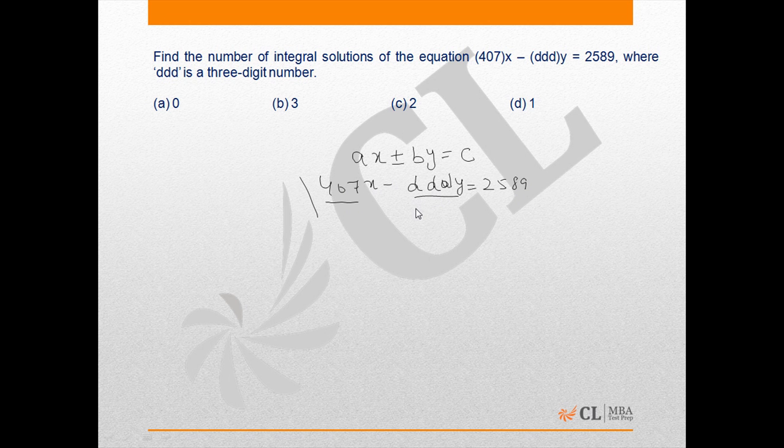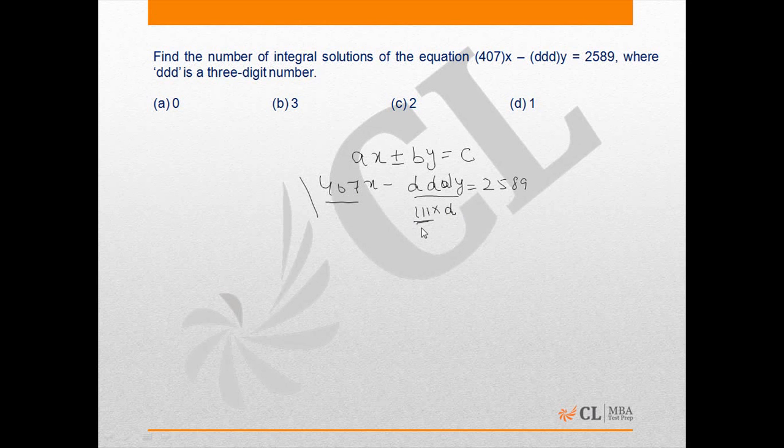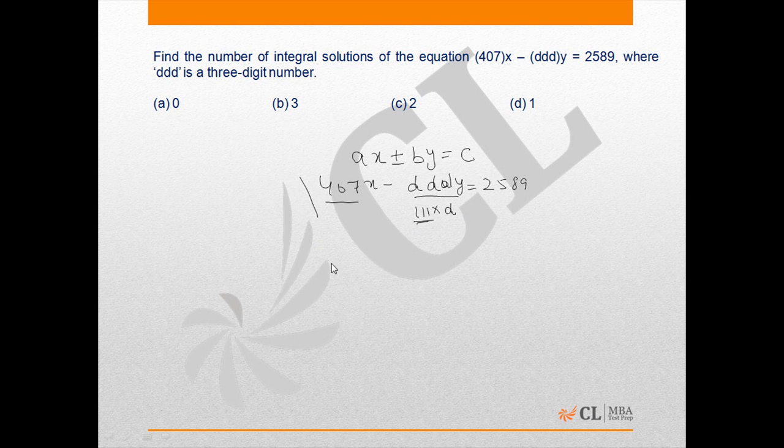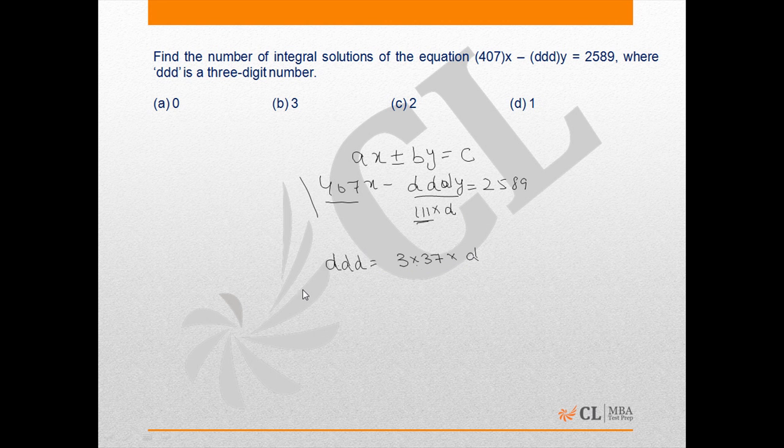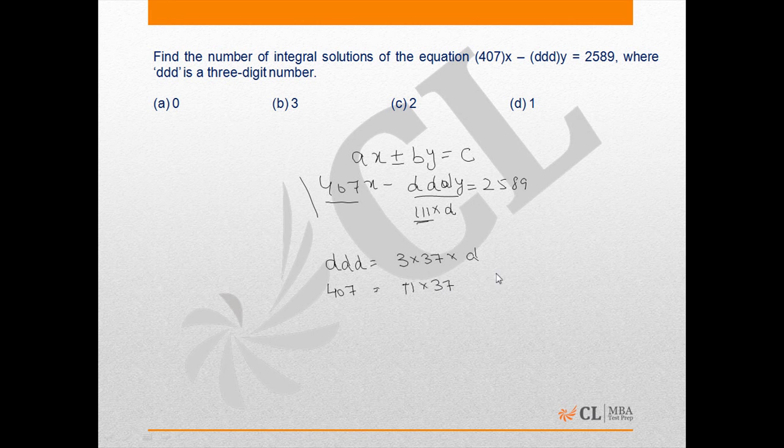DDD will definitely be a multiple of 111 times D. So we need to look for the factors of 111. A three-digit number can be factorized as 3 times 37, that is 111 times D, and 407 can be expressed as 11 times 37. As D is a single digit number, the common factor between A and B is considered.